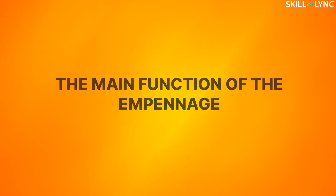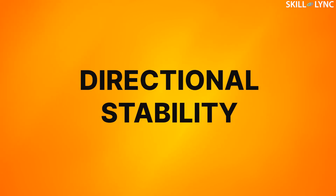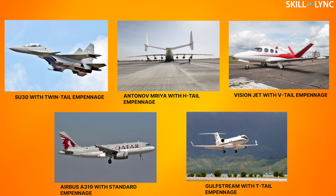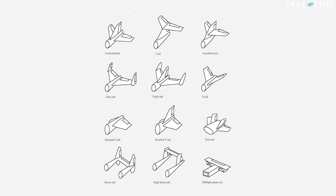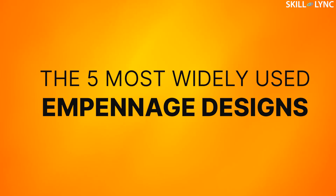The main function of the empennage is to give directional stability to the aircraft. But different aircraft are made with different design parameters and different roles in mind. Because of this, the wings and the empennage design of the aircraft also changes. In reality, there are actually more than 10 different types of empennage designs used in aircraft all around the world. In this video, we will only be talking about the five most widely used empennage designs.